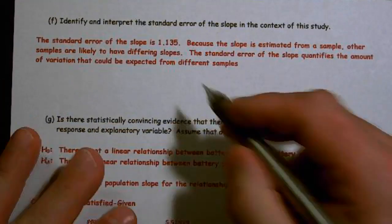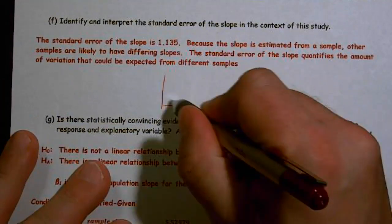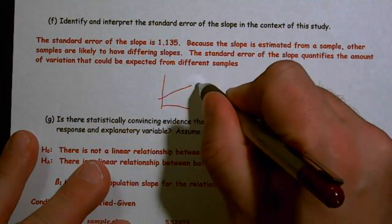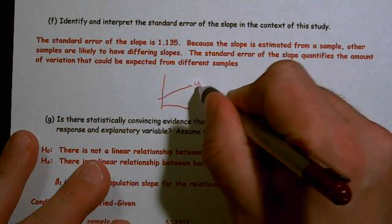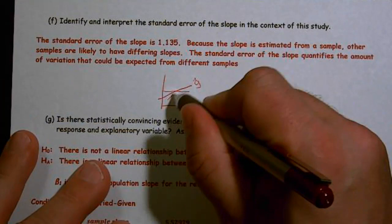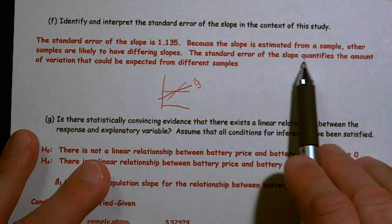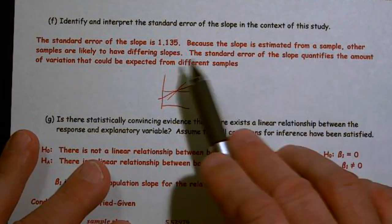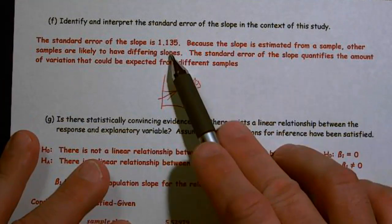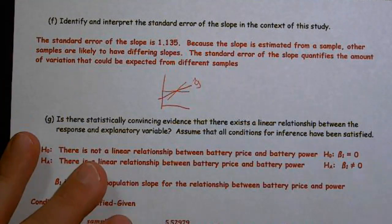Because the slope would estimate from a sample, other samples are likely to have different slopes. So if we end up with a slope of this is what came from our sample, other samples could vary. How much can they vary? Well, the standard error quantifies the amount of variation. And in this case, 1.135 is what we expect to vary.